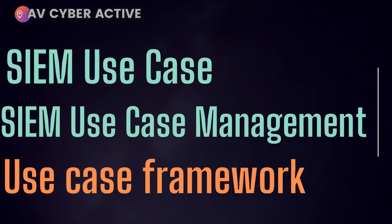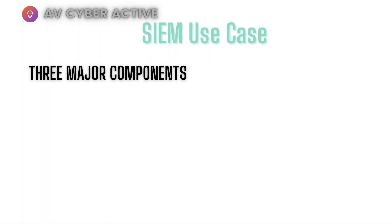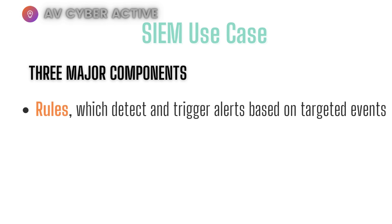Let's get started. A typical SIEM use case has three major components. The first and most important one is the rule itself — this is basically the sum total of all the event types or events that you want to use for your base use case. You can say it's the heart and soul of your use case.